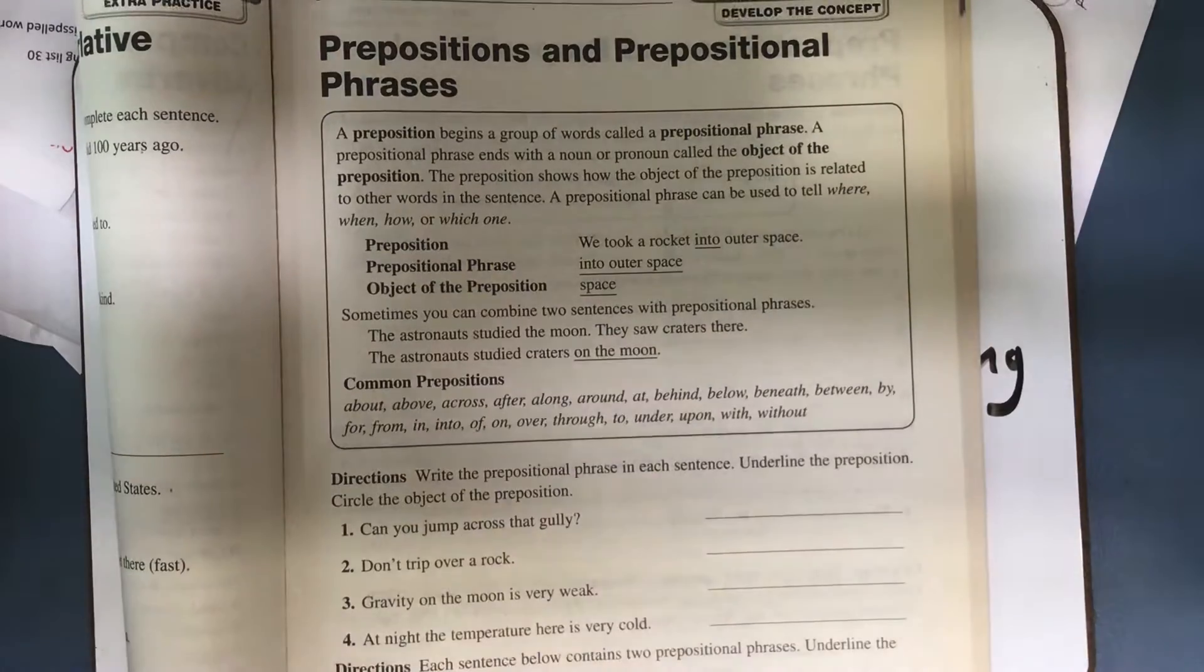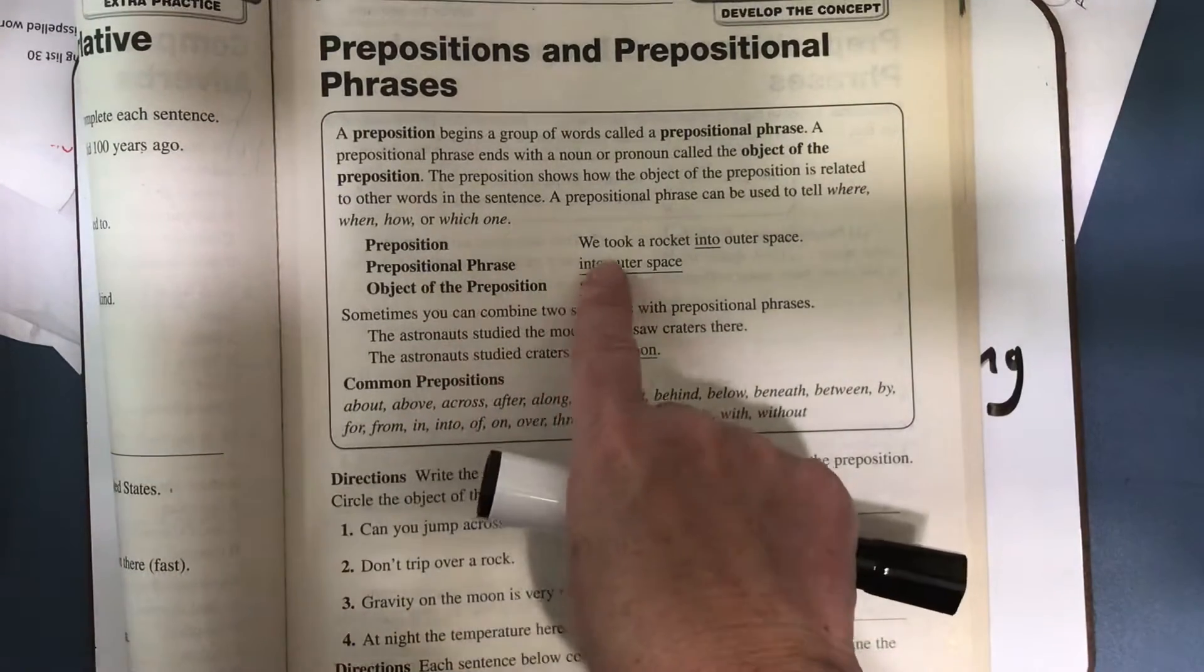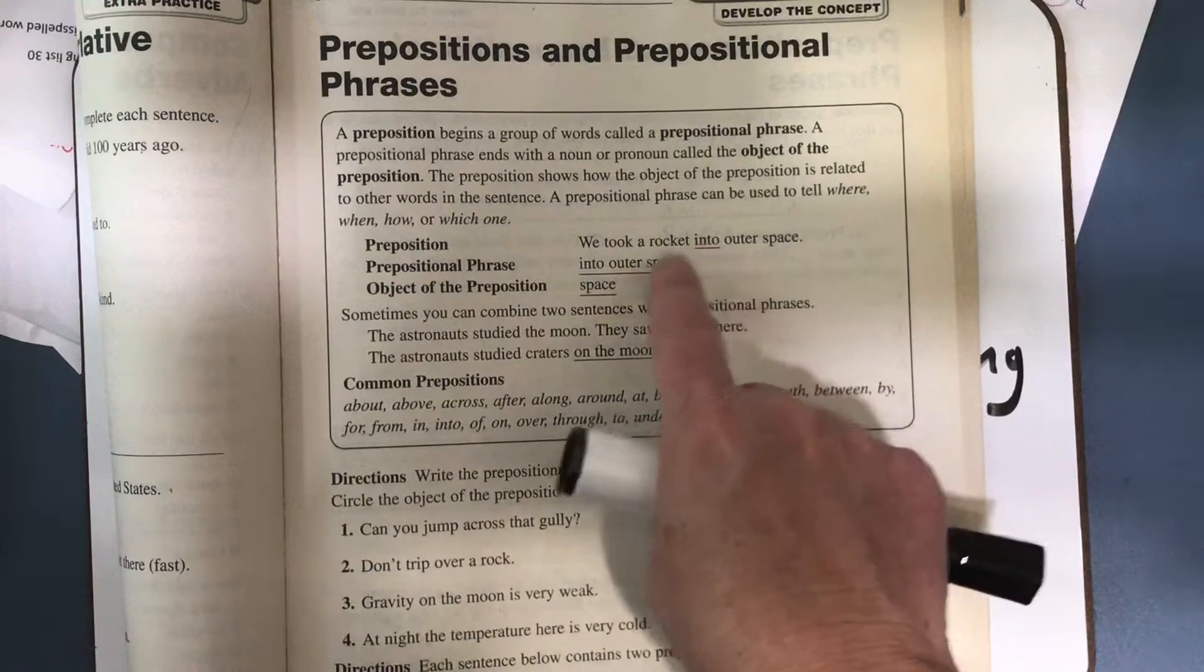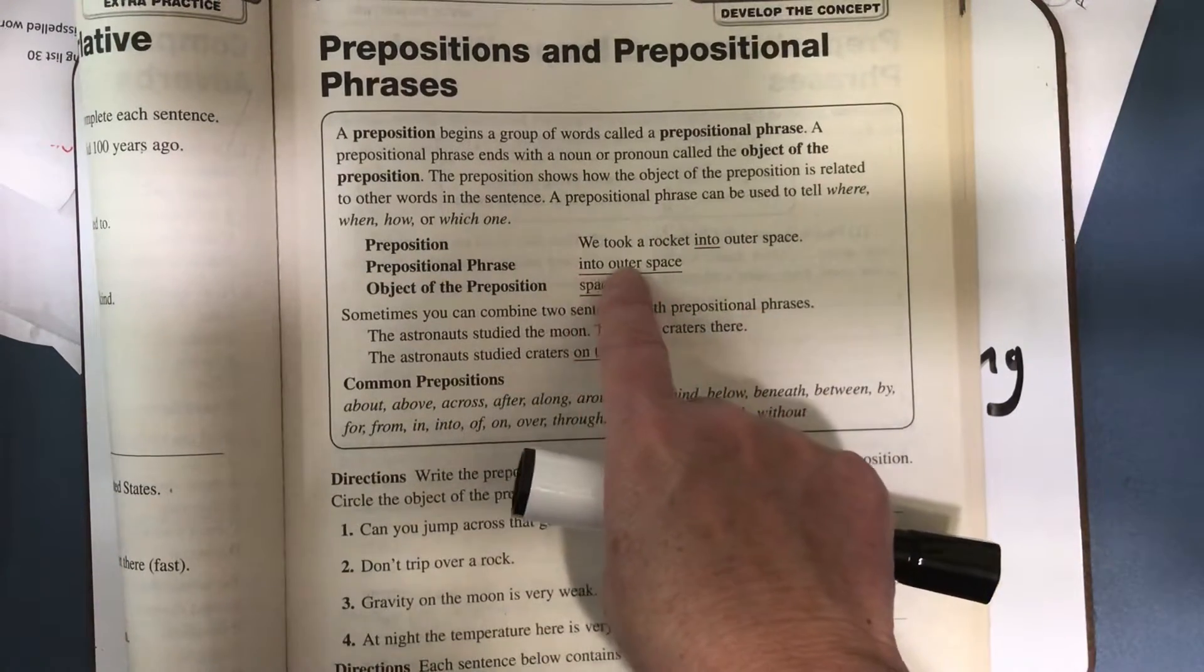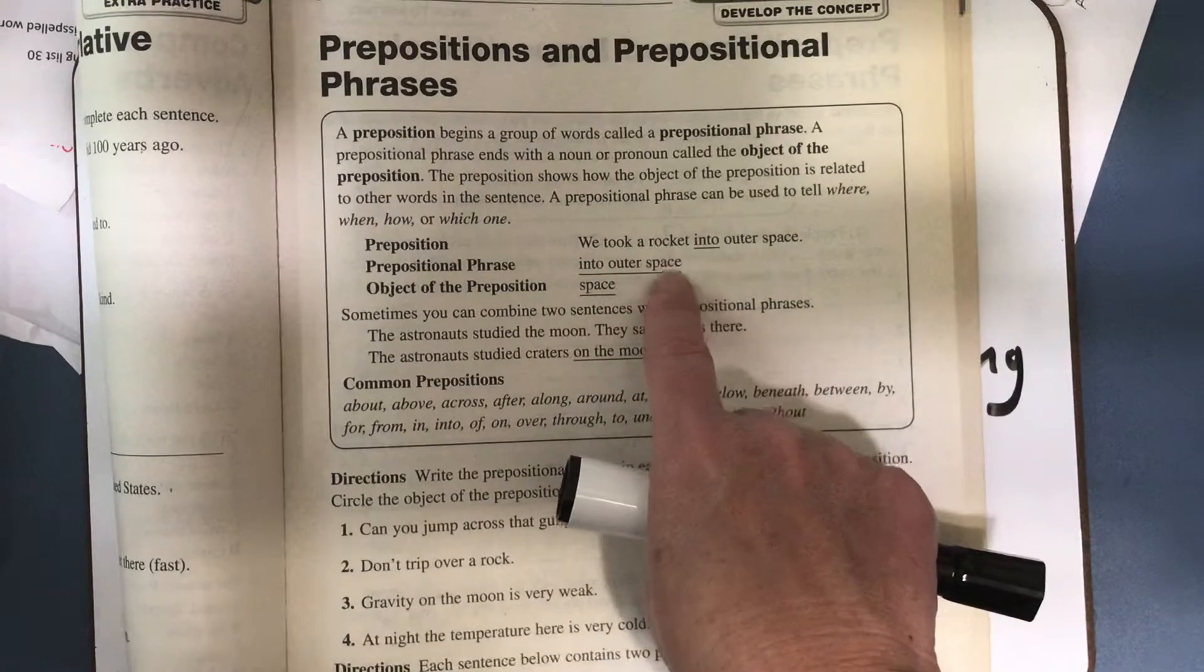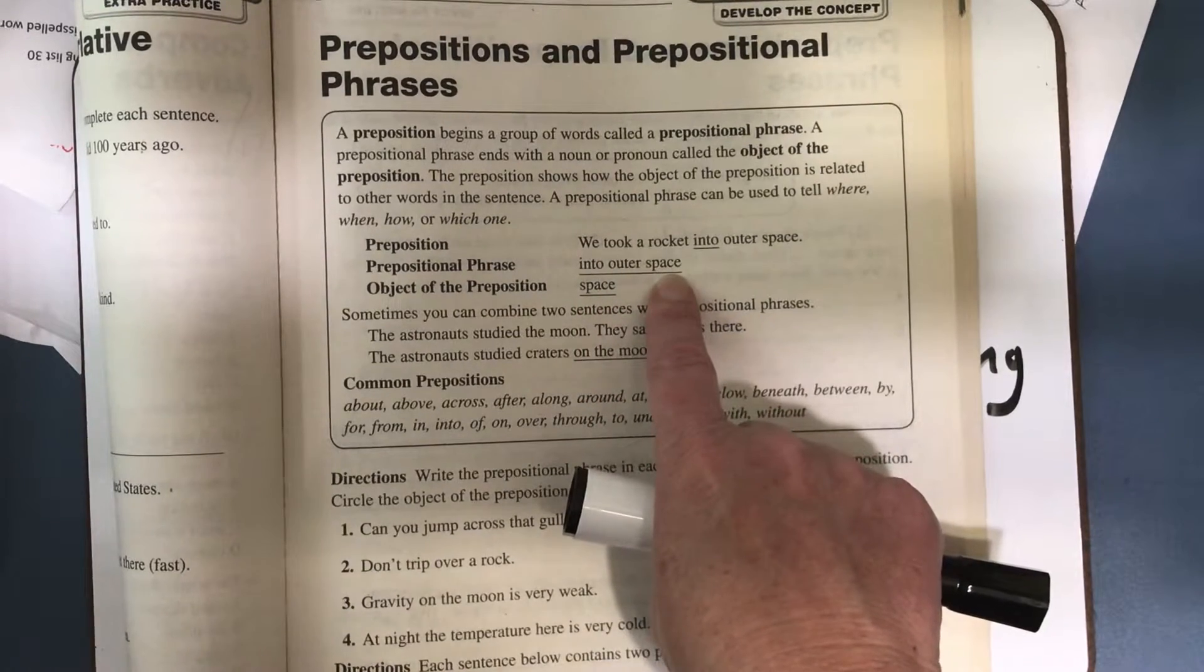I'm in your workbook on page 97. So here's a sentence: We took a rocket into outer space. The preposition is into. The entire phrase is into outer space, and the object of the preposition is space. It's the noun, the last word in the prepositional phrase.